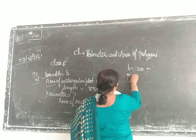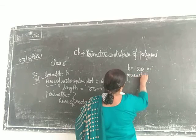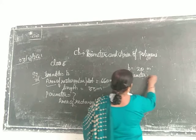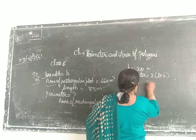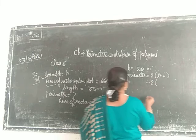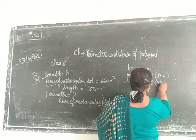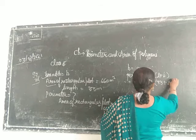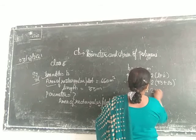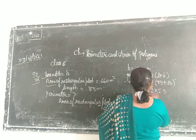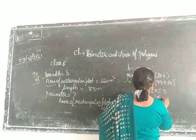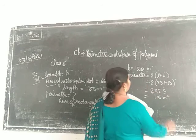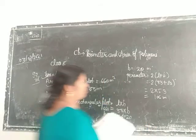Now perimeter equals 2 times L plus B. L is 33, plus breadth is 20, so multiply by 2 times 53. It means 2 times 3 is 6, 2 times 5 is 10, so 106 meters.